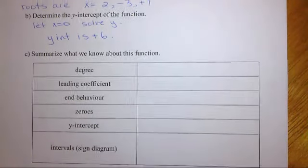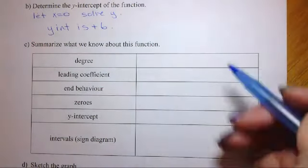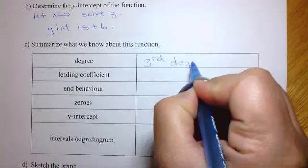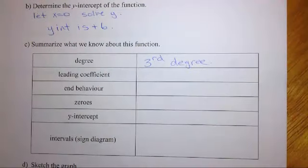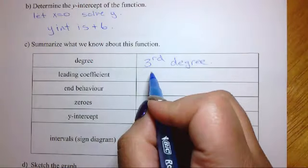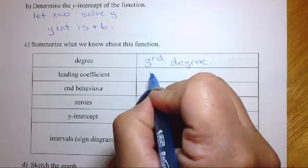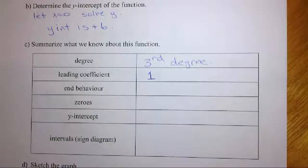Now, the degree of the function, just to summarize what we've done before, we know that it's a third-degree polynomial because the highest power of x is 3. Now, the leading coefficient, so that's the coefficient in front of that x cubed, is 1. So that is a, the leading coefficient is 1.